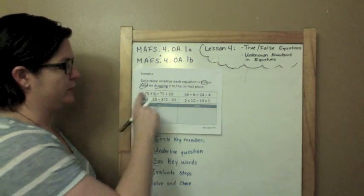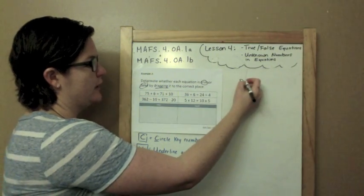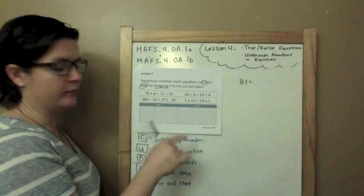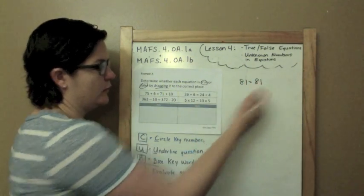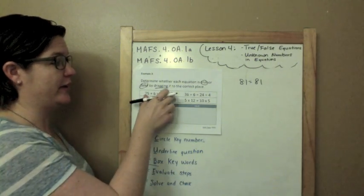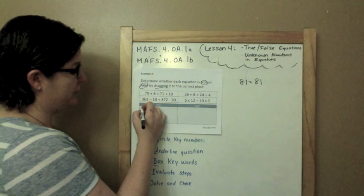So 75 plus 76 is 81. 71 plus 10 is 81. Are my values equal? Yes, they sure are. That's why I'm going to put this one right here.